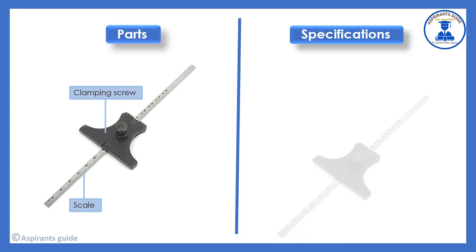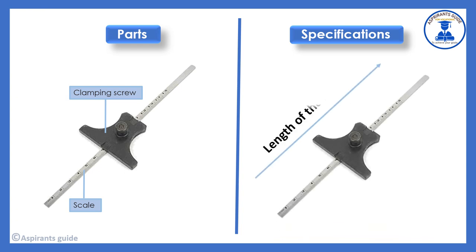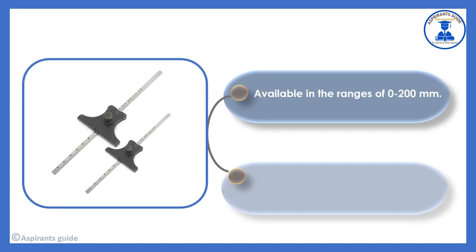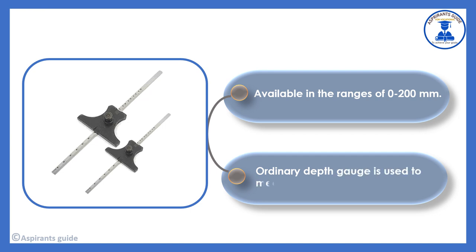The ordinary depth gauge is specified by the length of the scale, width, and thickness of the scale. The ordinary depth gauge is available in the range of 0 to 200 mm.